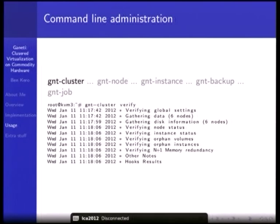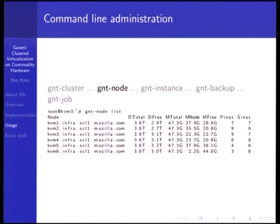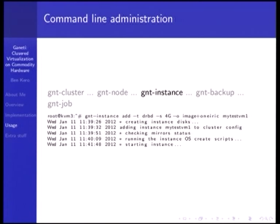gnt-node is for node operations. A simple command like list shows you available resources: memory free, disk free, how many primary instances are running on each node, and secondaries. gnt-instance is how you interact with instances — accessing a virtual serial console, getting info and VNC-ing in, adjusting network configuration to put it on a different bridge and VLAN, or creating and removing VM instances.